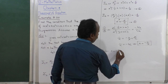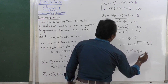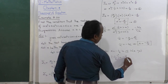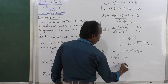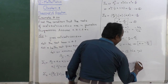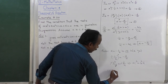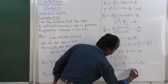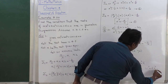Substituting alpha = -C/B into equation 3: (-C/B)³ = -D/A. This gives -C³/B³ = -D/A. The negatives cancel, and cross-multiplying both sides: A·C³ = D·B³. Therefore, the condition for the roots to be in GP is A·C³ = D·B³.